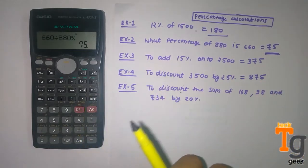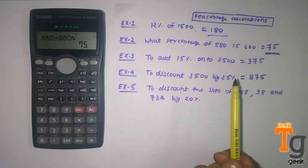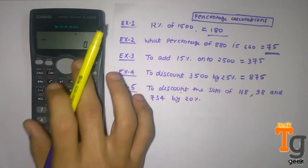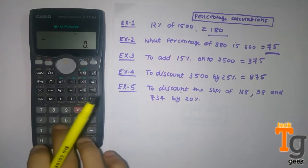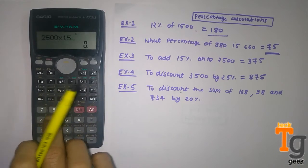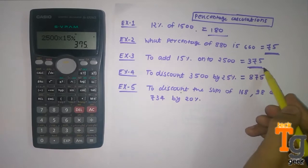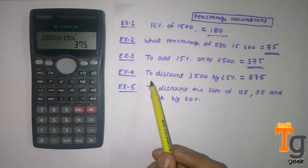And now comes question 3. The question 3 is to add 15% onto 2500. So how you do this: 2500 times 15 and then percent, then plus, and then you get your answer.